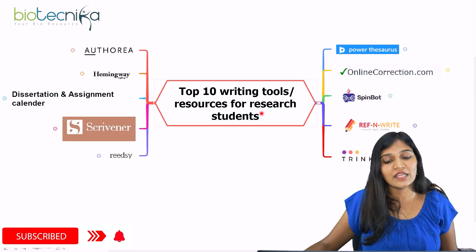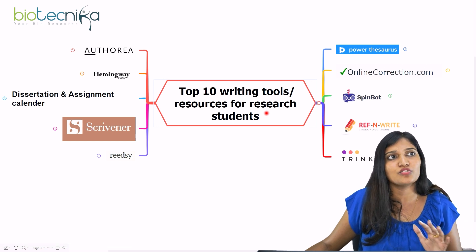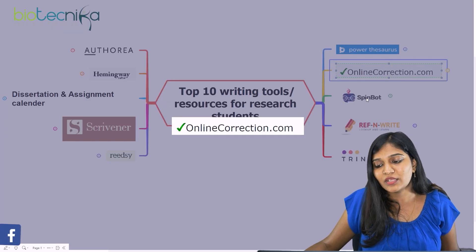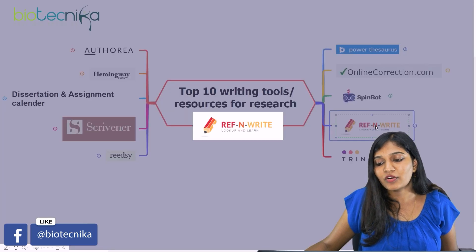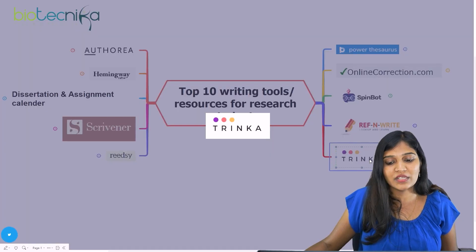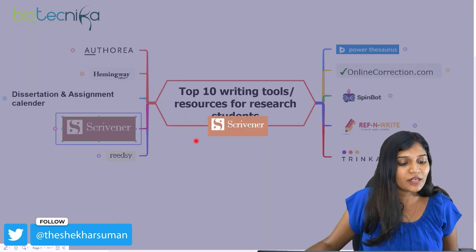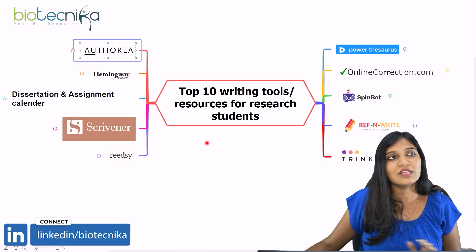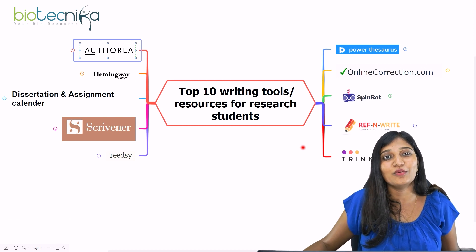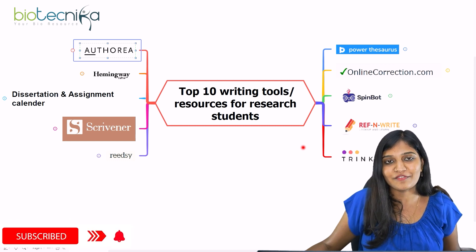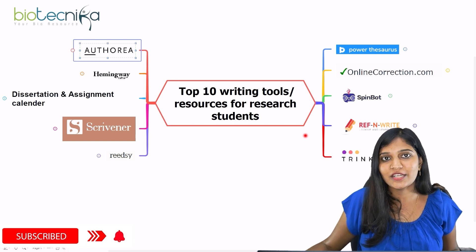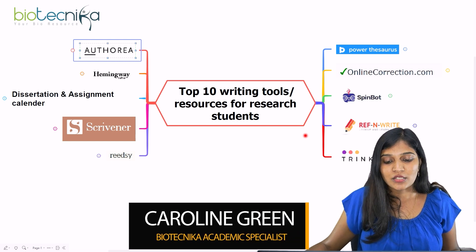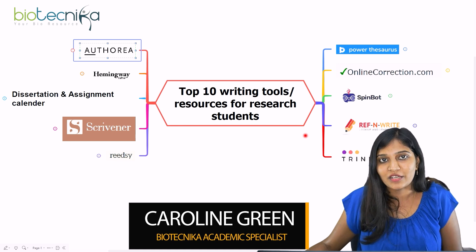Today we covered the top 10 writing tools for research students — whether in a Master's or PhD program. To summarize: Power Thesaurus, Online Correction, Spinboard, Ref-N-Write, Trinka, Authoria, Hemingway Editor, the Dissertation and Assignment Calendar, Scrivener, and RITSI. If you're looking for ways to make your writing faster and better, this video should help. Please like, share, and subscribe to Biotechnica. Leave any questions in the comments and we'll get back to you. Thank you!